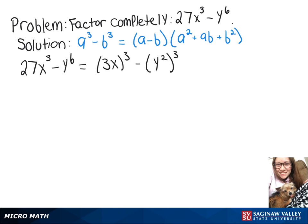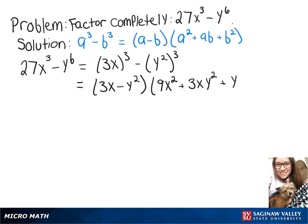Now we have our a and b values, so we can just put this into the formula. We have (3x minus y squared) times (3x quantity squared gives us 9x squared, plus 3x times y squared, plus y squared squared gives us y to the fourth).